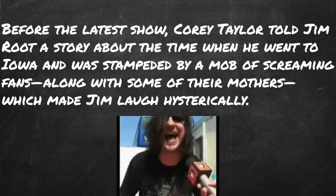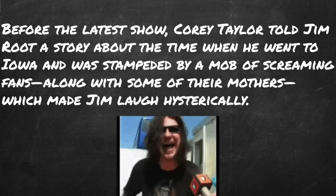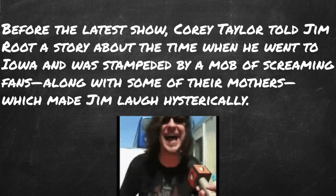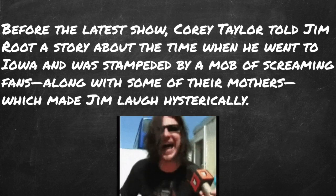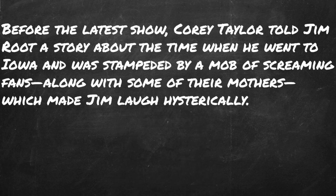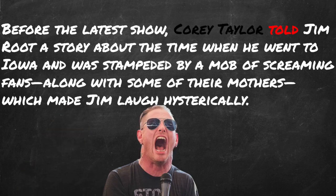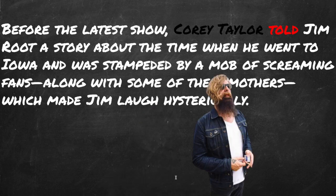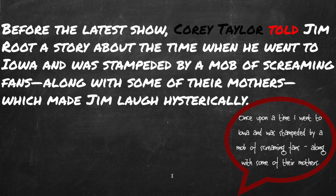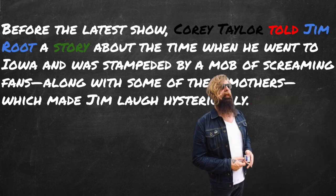I made this sentence extra long on purpose. Details are great — they make sentences more interesting — but most of this we don't even need. Let's sort through all the fluff and find the four parts we really need: the subject, Corey; the verb, told. So what did Corey tell? Did he tell Jim, or did he tell a story? He told a story to Jim. So 'story' is the direct object, and Jim is receiving the story, so Jim is the indirect object.